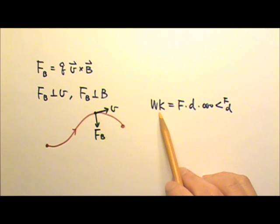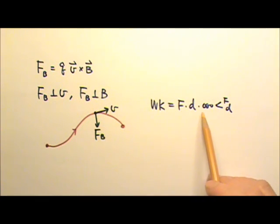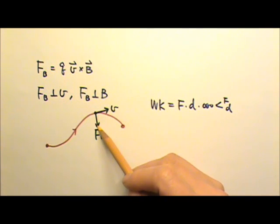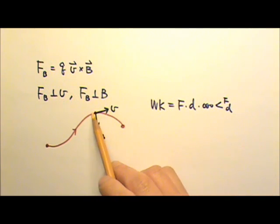Because the work done by a force is the force times the displacement times the cosine of the angle between the force and the displacement, a force that is in the radial direction is always going to be perpendicular to the displacement. So this force cannot do any work.